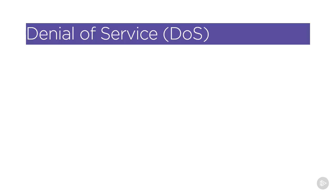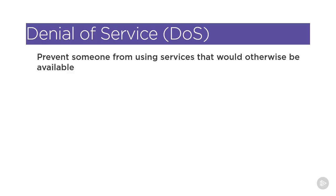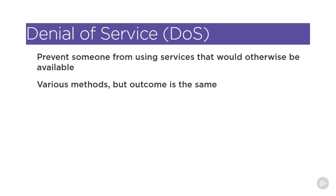A denial of service attack, or DOS for short, occurs to prevent someone from using services that they would otherwise be able to use. As we described in some of the previous slides, there are various methods on how to perform a denial of service attack, but the outcome is essentially the same in that the victim can't use the system that they would have otherwise.